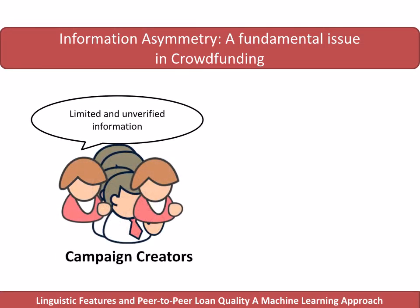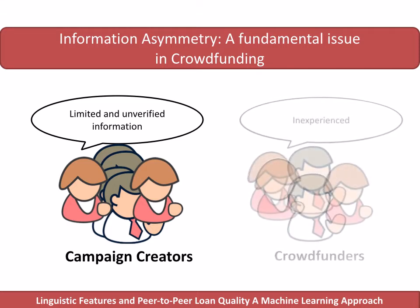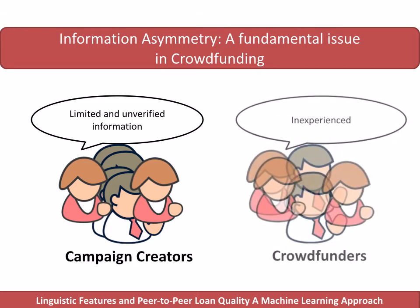The potential funders — the crowds — are often inexperienced and may not be able to filter out false and manipulated information. Therefore, the well-functioning survival of this market depends on the ability of all stakeholders to mitigate information asymmetry issues.